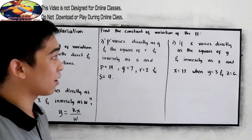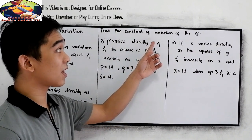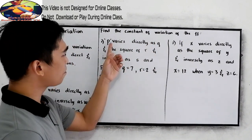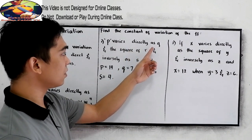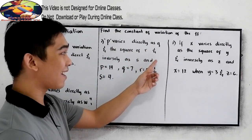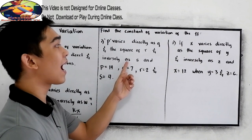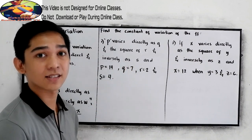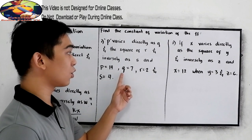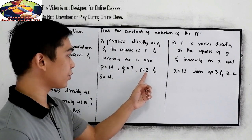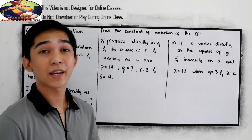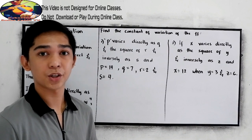Let's have these problems. Find the constant of variation of the following. p varies directly as q and the square of r, and inversely as s. And p is equal to 14, q is equal to 7, r is equal to 2, and s is equal to 4. We're going to find the constant of variation.